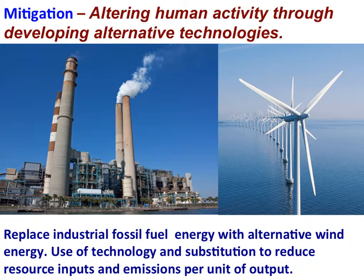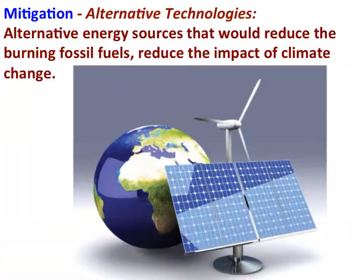A mitigation strategy to reduce the causes of climate change would be to increase the use of renewable energy forms, such as solar energy. Replace industrial fossil fuel energy with alternative solar power energy. Strategy one: use of technology and substitution to reduce resource inputs and emissions per unit of output.